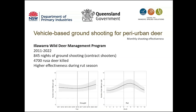Rusa deer are also present south of Sydney in the Illawarra region and are causing a lot of issues with the community, both in terms of economic impact and health and safety. In the last 10 years, the city council, local land services decided to implement a management program involving contract shooters, and they removed 4,700 Rusa deer over the years. As you can see on the left plot, the effectiveness was pretty stable over time — the number of deer killed per night remained stable over the last 10 years.